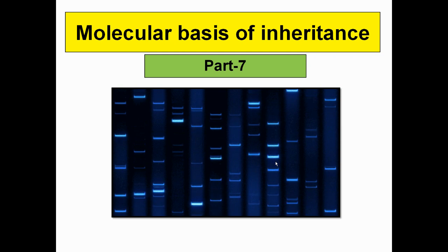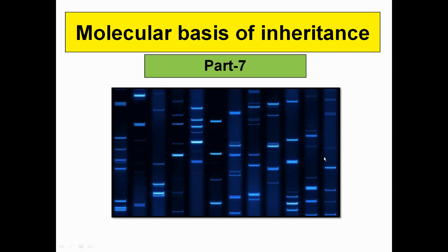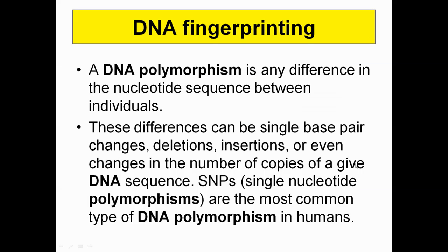First of all, what is DNA fingerprinting? DNA fingerprinting is also referred to as DNA profiling. It is based on the fact that 99.9 percent of the genome of Homo sapiens on Earth is similar. Only 0.1 percent shows variation, which is why we are quite different from each other. DNA fingerprinting focuses on that 0.1 percent of DNA — specifically on repetitive DNA within it.